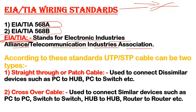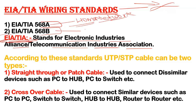The cable itself is similar, but only the color pattern will be different — for similar devices versus dissimilar devices. For that, they created two standards: 568A and 568B. 568A is meant for home networks, and 568B is meant for corporate or company networks.